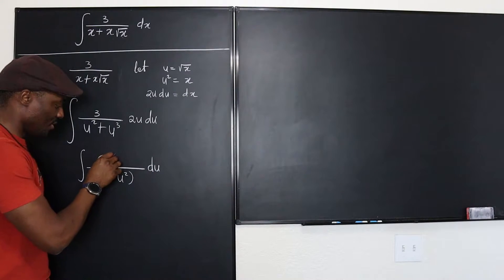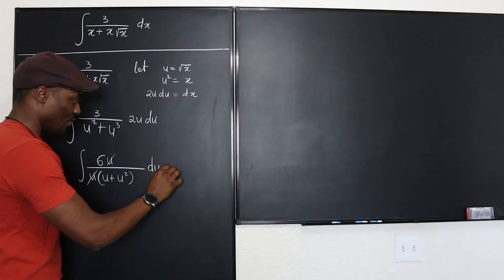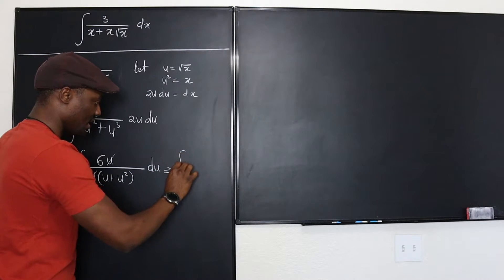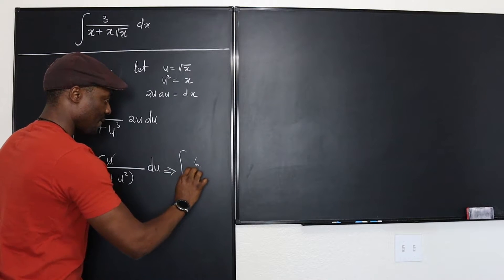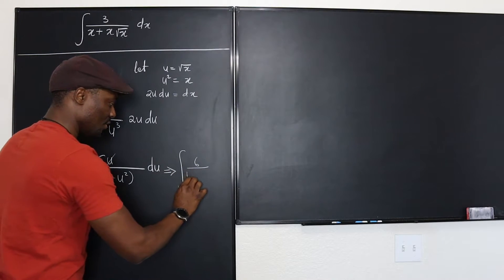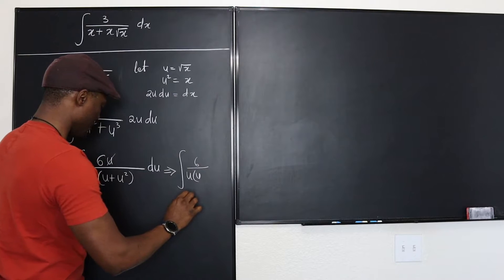That makes things easy. This u can take this u out and what you have left will be the integral of 6 over u into u plus 1.